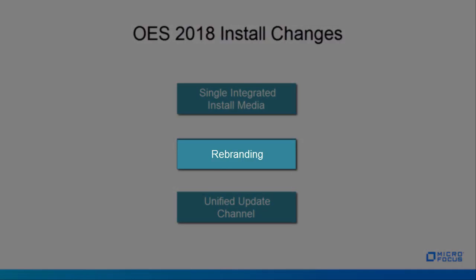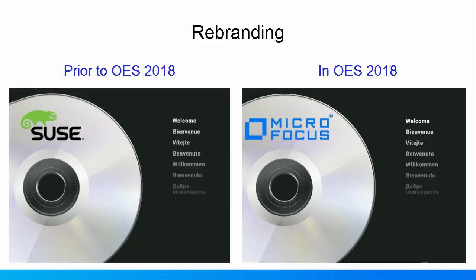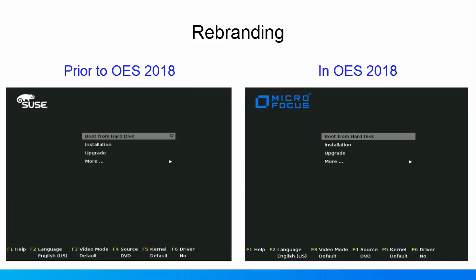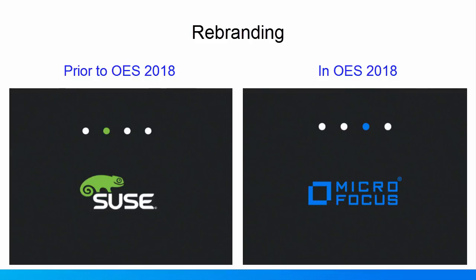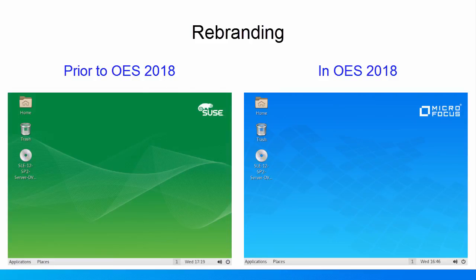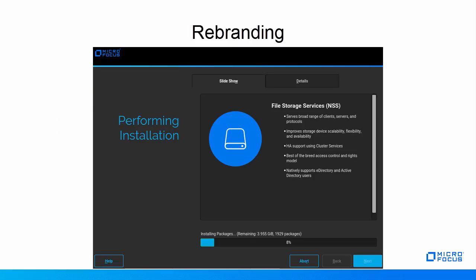Rebranding. OES 2018 comes with a Micro Focus brand. As part of rebranding changes, OES installation screens are modified to provide a new look, and a few changes in the install workflow enhance the install experience. A few sample screenshots of OES installation screens are shown comparing with earlier OES versions. Onboarding screens are newly introduced in OES 2018 to highlight all OES features. While installing OES, click the Slideshow tab to view the features available in OES 2018.